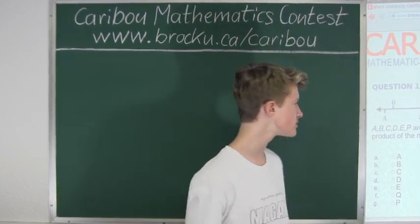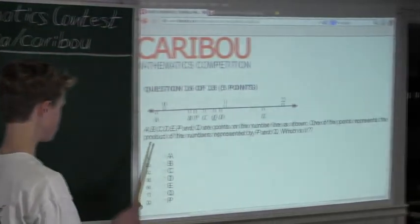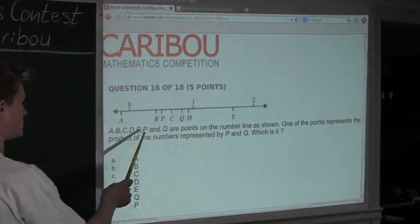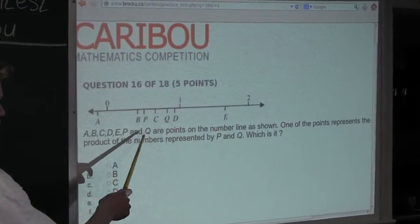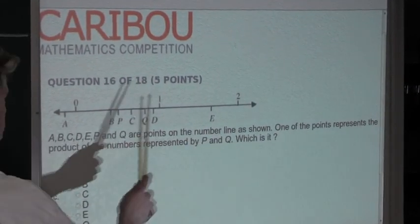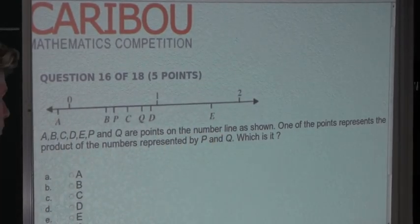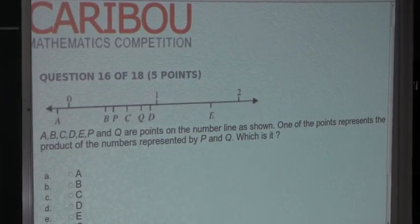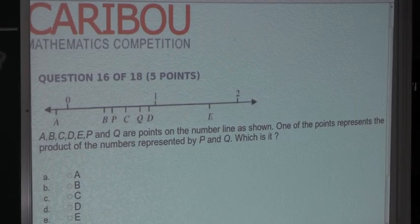So, the question is: A, B, C, D, E, P, and Q are points on the number line as shown. One of the points represents the product of the numbers represented by P and Q. Which is it?